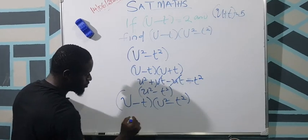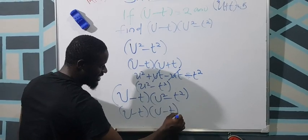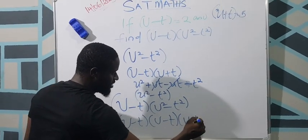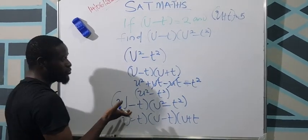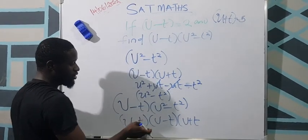So what is u square minus t square? We have u minus t times u plus t. What we need to do now is just to fix in the values for u minus t and u plus t.